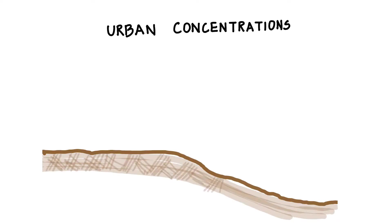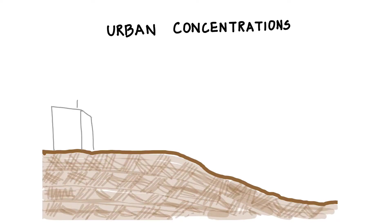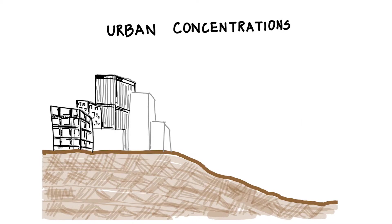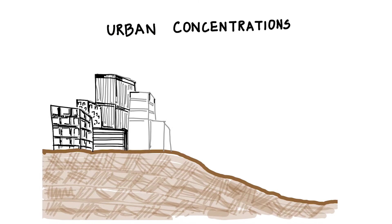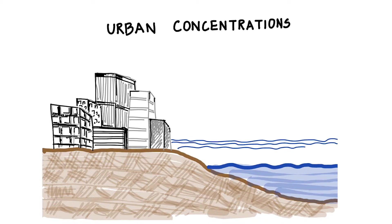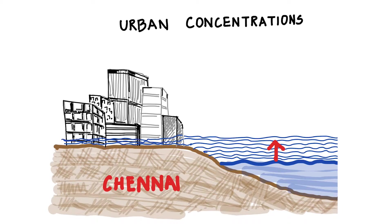A third major cause of flooding is urban concentration. The Chennai, India floods of 2015 were attributed in part to urbanization and the concentration of population in a low-lying area. Because flood-plain areas are commonly encroached on and built on, there isn't enough open space, greenery, and soil for rainwater to naturally drain into the ground. This lack of natural drainage capacity led to the severe floods of 2015.